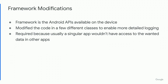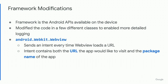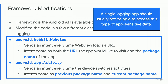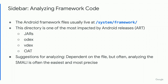What did those framework modifications look like? One example is they modified WebView so that every single time WebView went to load a URL, it sent an intent containing two extras: the URL it was intending to load, and the application's package name intending to load it. They also did this for the Activity subclass, which runs just about all the time — they were tracking when applications were switching, who was in the foreground, who was in the background. The reason they had to go down to the framework level was that a single logging app, based on the Android sandbox, should not have that type of app-sensitive data.